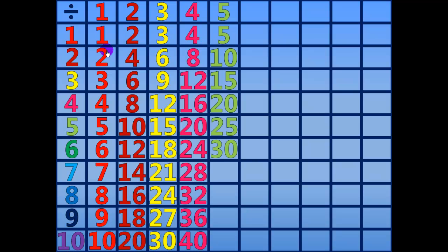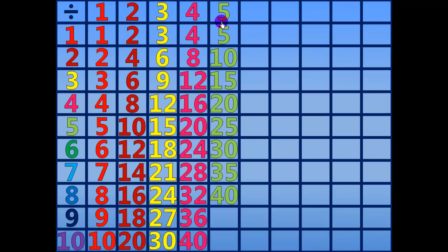30 divided by 5 equals 6. 35 divided by 5 equals 7. 40 divided by 5 equals 8. 45 divided by 5 equals 9.